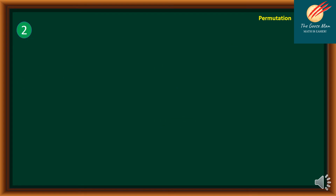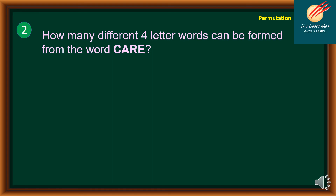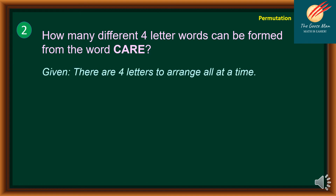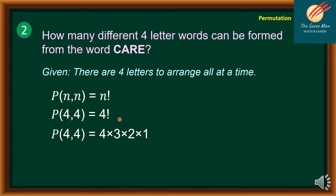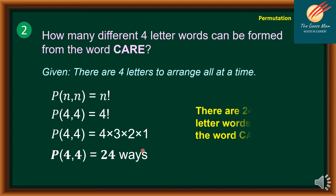Let's consider problem number two: how many different four-letter words can be formed from the word CARE? There are four distinct letters to arrange all at once, so we apply P(n,n) equals n factorial. We have 4P4 equals 4 factorial, which is 4 times 3 times 2 times 1, giving us 24. Therefore, there are 24 different four-letter words formed from the word CARE.